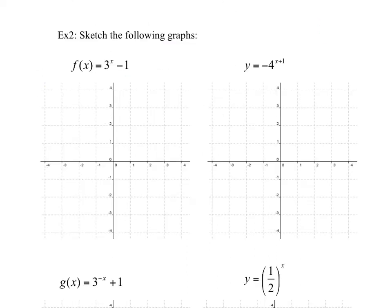Here are a few more graphs. Let's sketch f of x equals 3 to the power of x minus 1. Thinking back at transformations, this is just 3 to the power of x shifted down 1 — a translation 1 down.